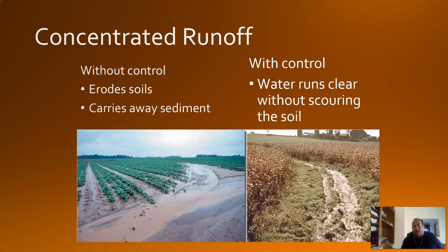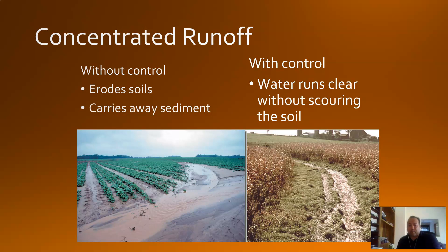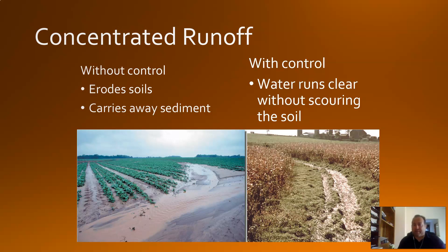Another thing we'd like to avoid is creating too much runoff. Surface runoff is water that doesn't get into the soil — it runs off the top. Without control, you get a lot of soil erosion and sediment carried away that ends up somewhere and causes problems. But if we use some sort of control — a waterway created through terracing or contour farming — the water just runs clear. We're going to concentrate that runoff into certain areas so that since it's going to happen anyway, it's not going to be as big a problem.